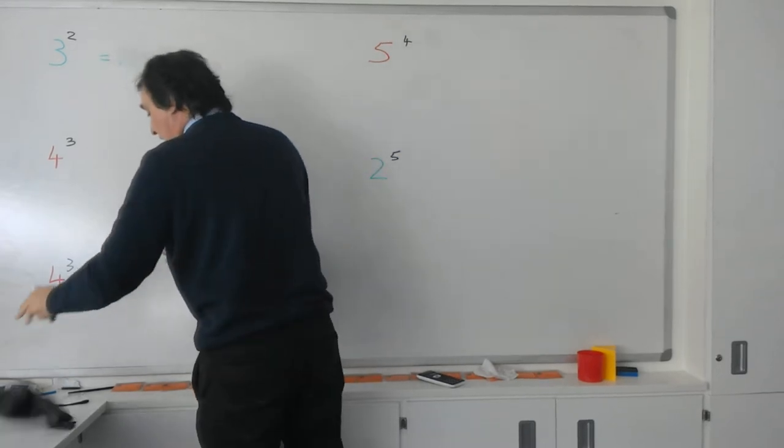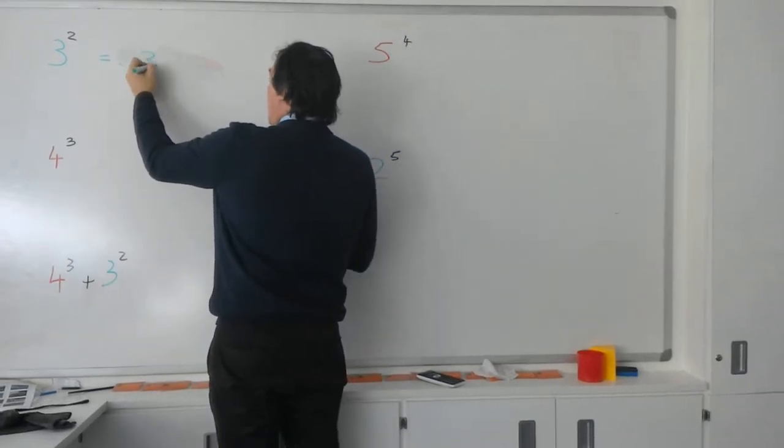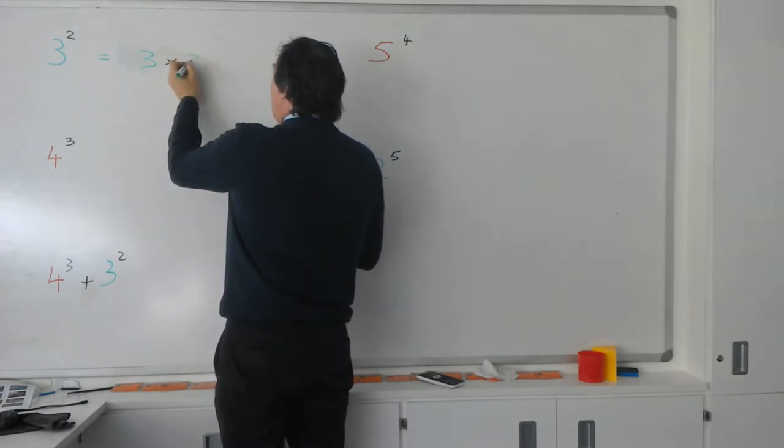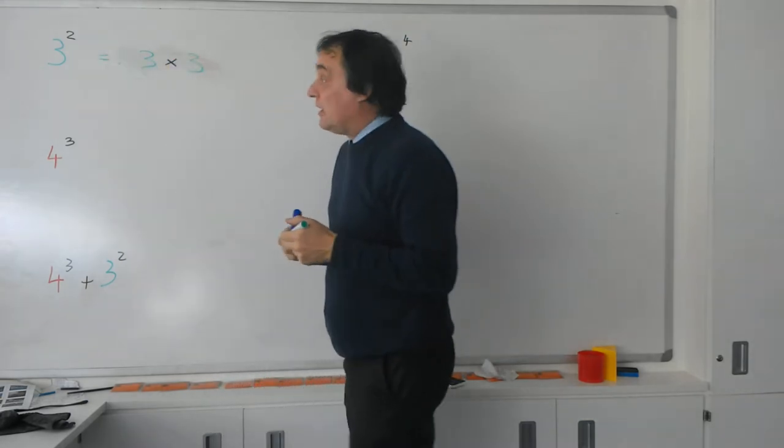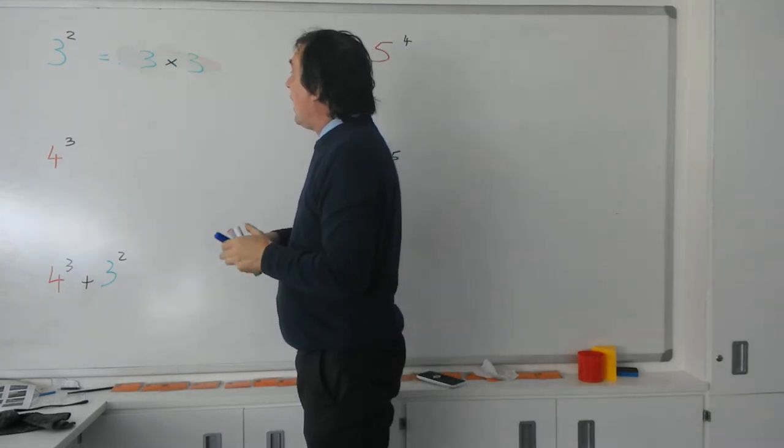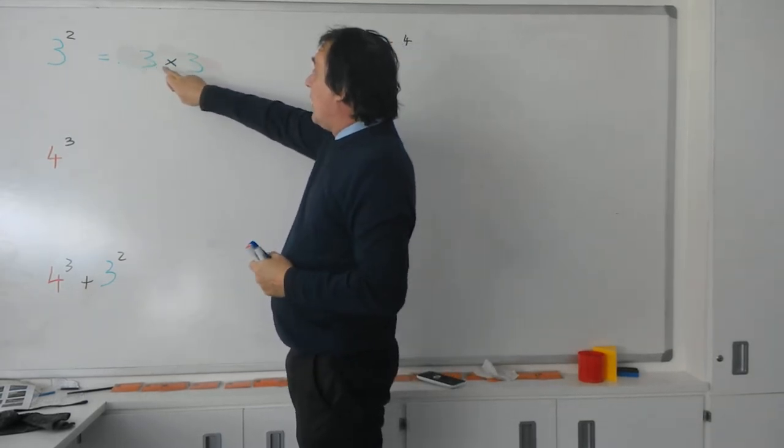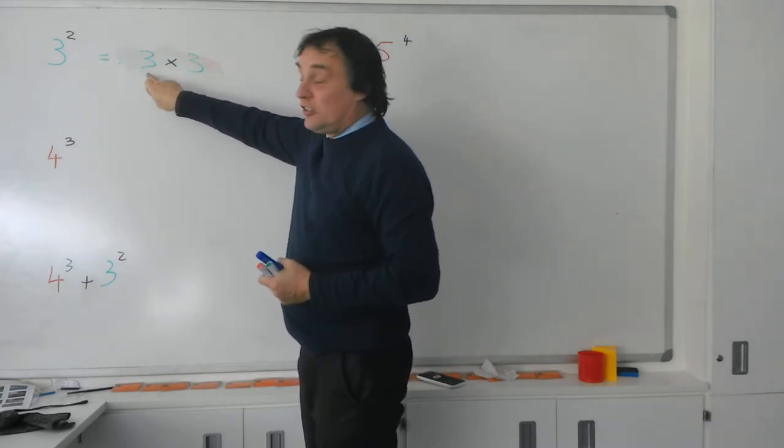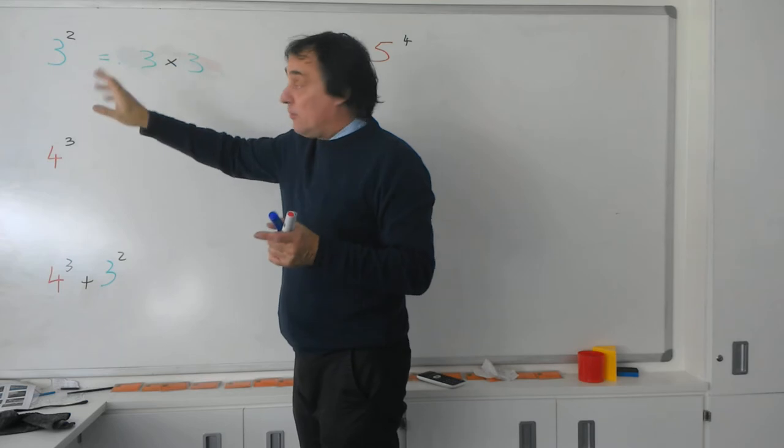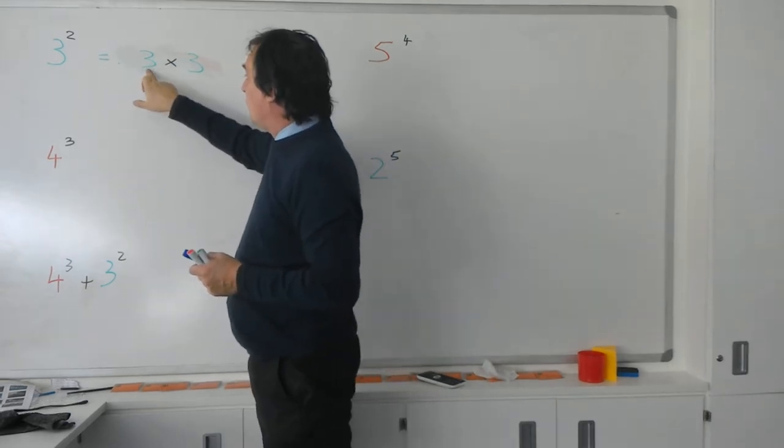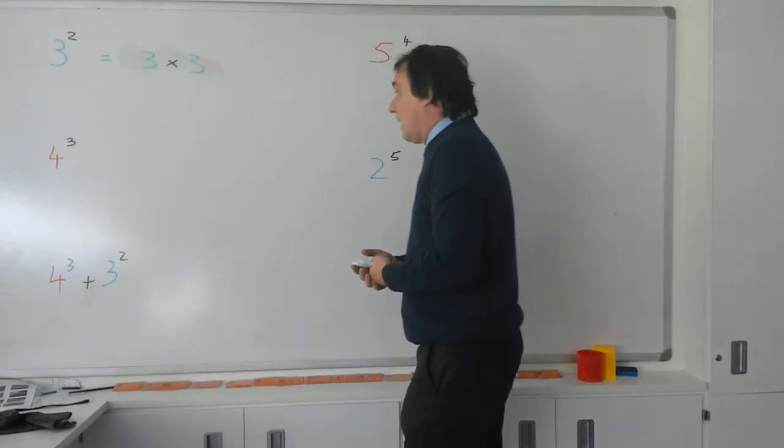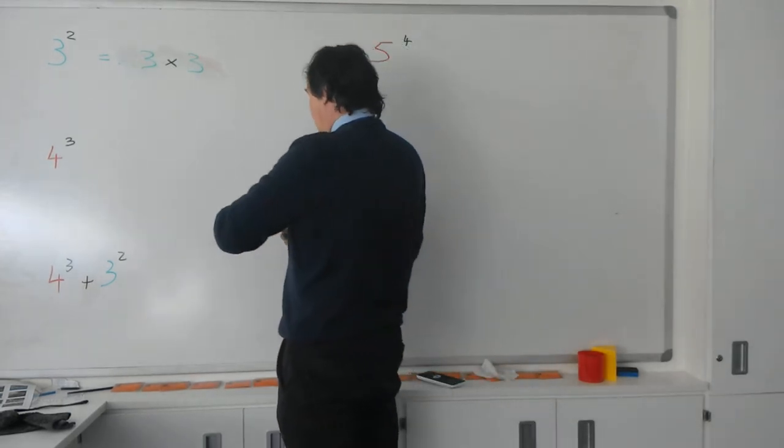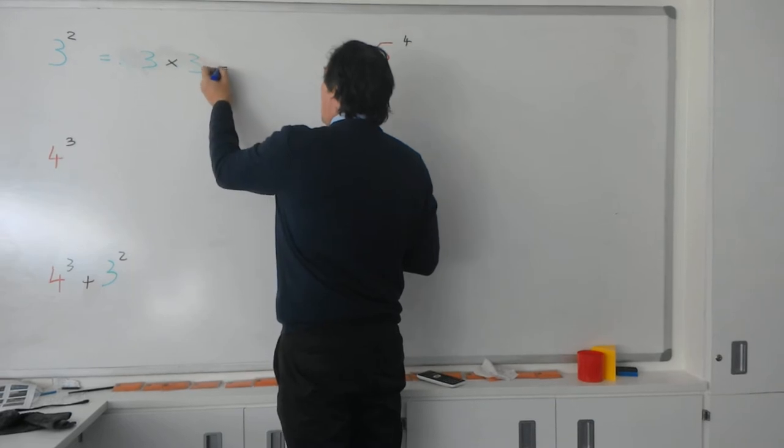So 3 squared actually means 3 times 3. Now this power here, this 2 up in the air, actually means that you multiply the 3 by itself. And can you see there are two 3's actually written here, but with a multiply sign between them. And the reason for that there are two 3's is because of that number 2 up there. So 3 times 3 then gives us an answer of 9.